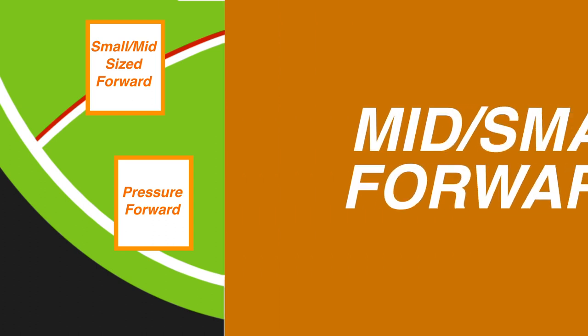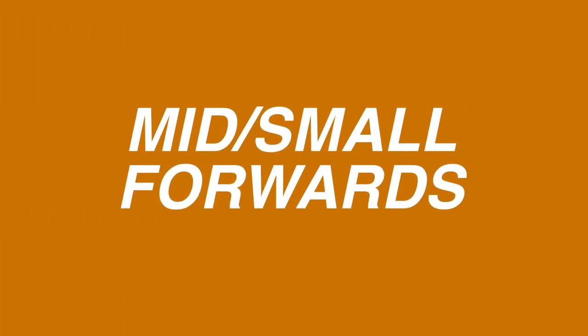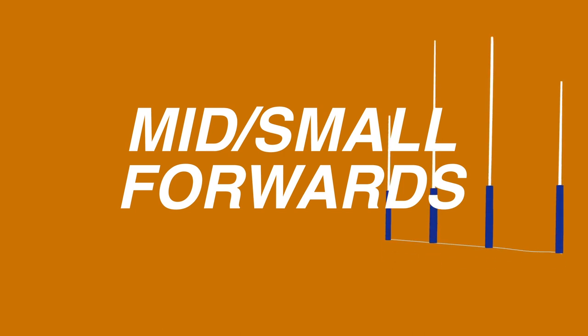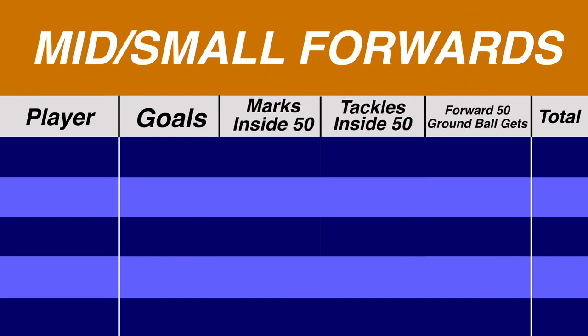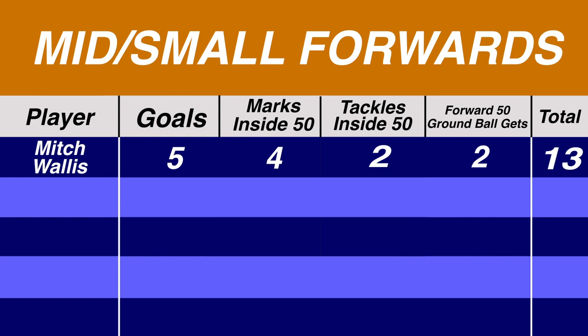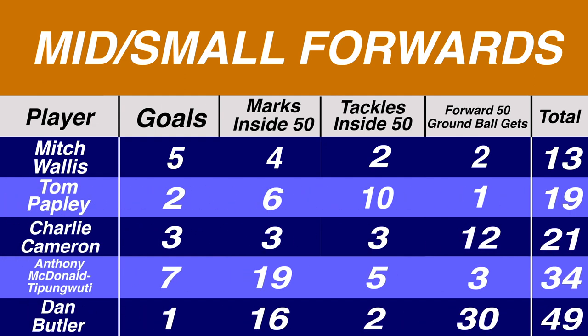The next category focused on forwards who aren't as damaging in the air, but are still expected to hit the score sheet, gather dangerous balls that spill loose, and lock the ball in the attacking end. Goals were once again selected, with contested marks replaced by marks inside 50. Tackles inside 50 and forward 50 ground ball gets were also included. Players defined as key forwards were ineligible. Once again, two clear standouts emerged — an incredibly well-rounded season from Mitch Wallace saw him finish in the top 5 of each category with a total of 13, and Tom Papley claimed 2nd spot on 19.